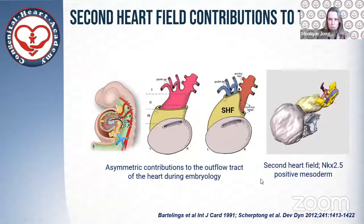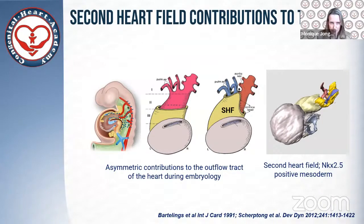For those not familiar with the second heart field — what do we mean by this? The second heart field is a mesenchymal cell population situated posterior to the heart during development. If this is an embryonic schematic overview with the head region here and the celomic space here, we see the heart situated here as a tubular space with those blue neural crest cells, and in yellow is indicated the second heart field, which will still be added to the heart during development.